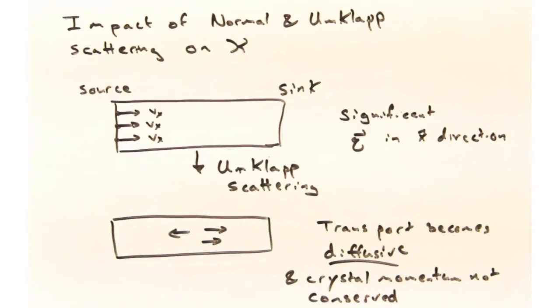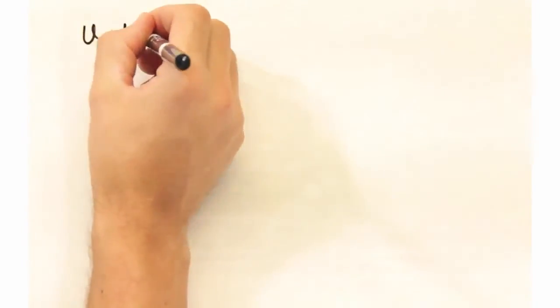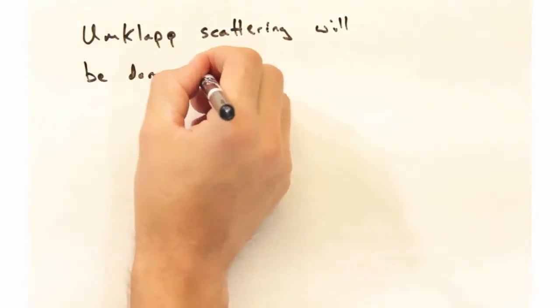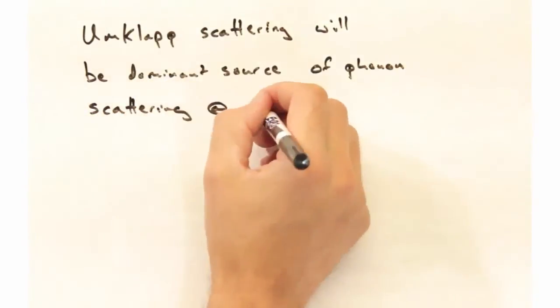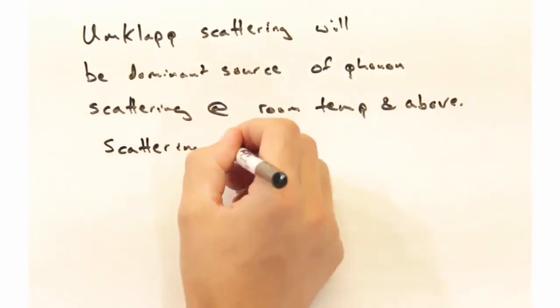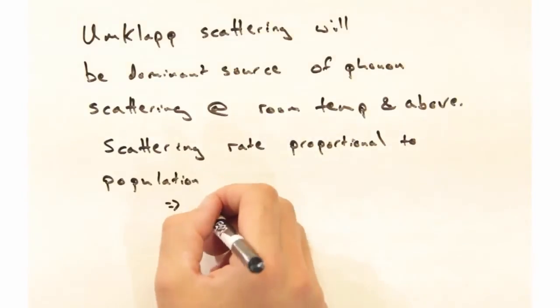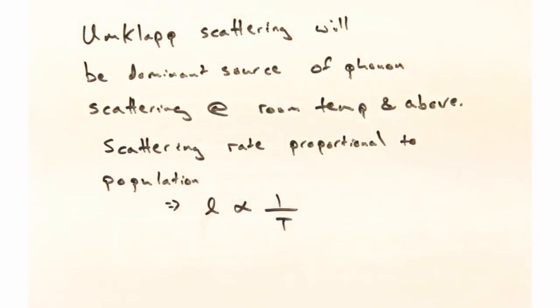This continues to be pretty hand-wavy, but let's bring this umklapp scattering back to the phonon mean-free path and thermal conductivity. Umklapp scattering is going to be the dominant source of phonon scattering at room temperature and above, with the scattering rate proportional to the population. From this, we obtain that the mean-free path for phonons is inversely proportional to the temperature. Increase in temperature increases the phonon population and decreases the mean-free path.